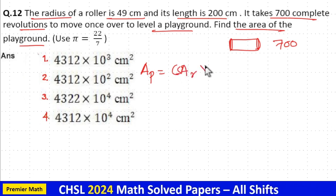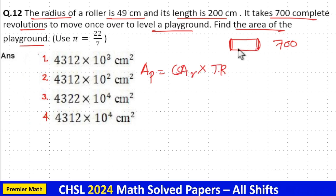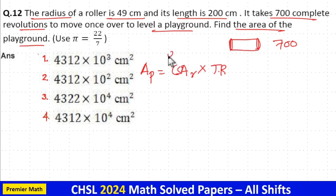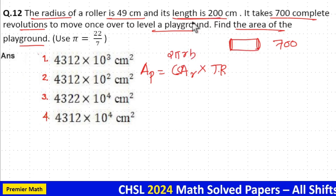The curved surface area of this roller is equal to CSA of cylinder, which is equal to 2πRH. Now here, height is the same as the length of the roller.